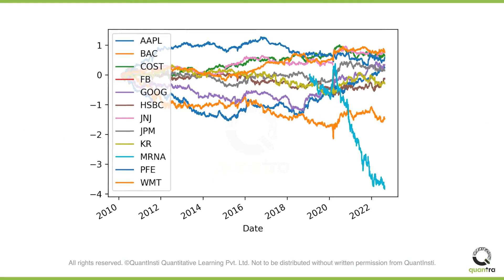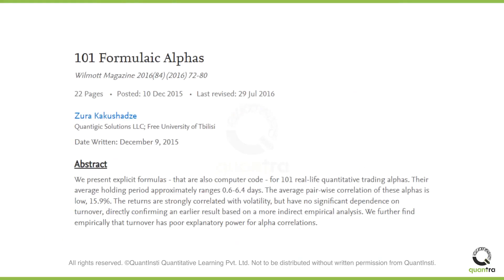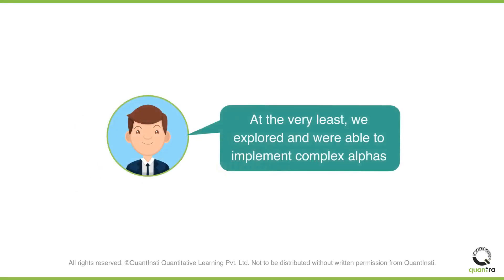Perhaps this is not surprising, since there does not seem to be any economic rationale underlying those alpha formulas. From the paper, we can conclude that these alphas were developed for intraday trading, with a time resolution in the second range. However, the most important point is that we have explored the possibility, and we have learned to implement complex alphas quickly and with just a few lines of code.